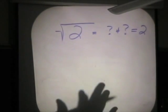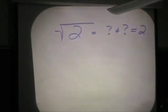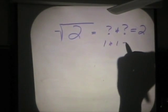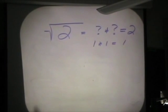Now, somebody give me an idea of a number that I could take times itself that would either be equal to 2 or at least come really close. Raise your hand. 1 times 1 is 1. Let's write that down. 1 times 1 is 1.